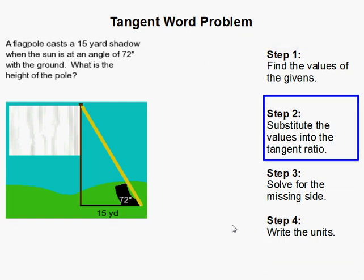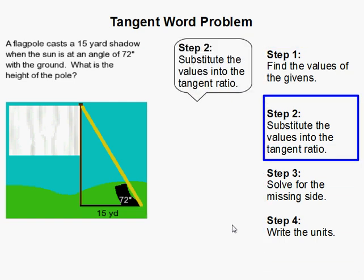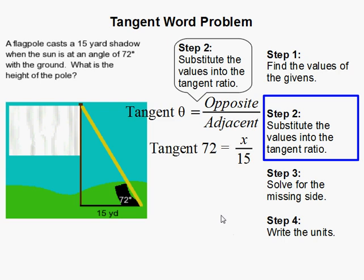So I'm going to go ahead, and now we have to substitute those values into the tangent ratio. So to recall, the tangent ratio is the tangent of your angle, usually theta, is equal to the opposite side over the adjacent side.